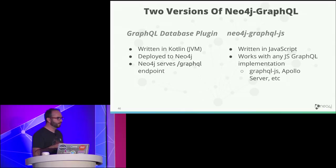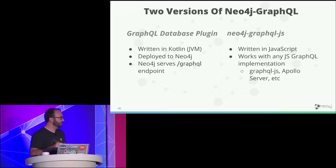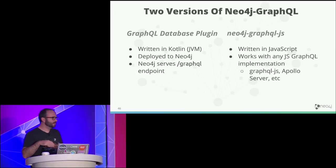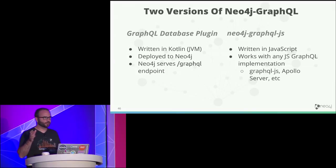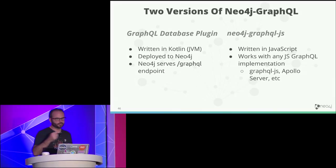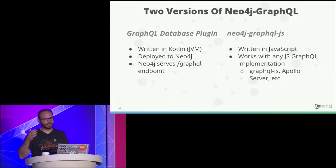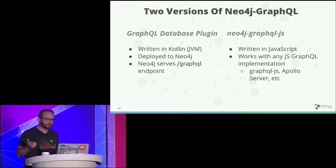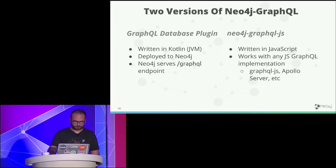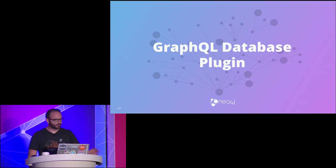There are two versions of our Neo4j GraphQL integration. One is a GraphQL database plugin — JVM, written in Kotlin, deployed to Neo4j so Neo4j serves your GraphQL endpoint directly. It also exposes GraphQL procedures so you can run GraphQL in Cypher. The other is Neo4j GraphQL JS — a JavaScript library that works with any JavaScript GraphQL implementation like GraphQL.js or Apollo Server.